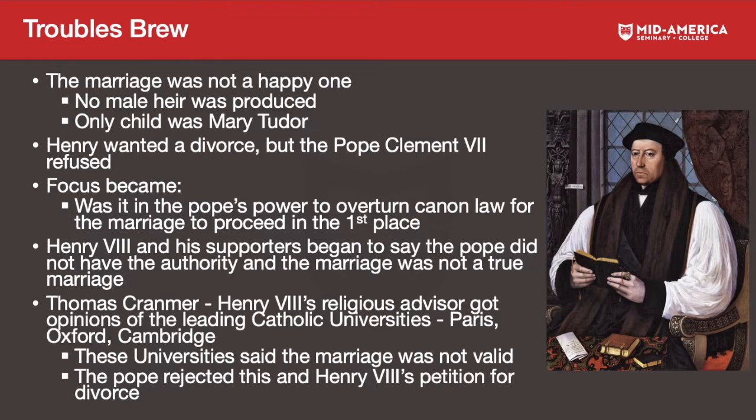Henry had to get the divorce through the Pope, but Pope Clement the Seventh refused — there was no reason for it. The focus then became whether it was even in the Pope's power to overturn canon law for the original marriage. Henry the Eighth and his supporters began to say that the Pope did not have that authority and the marriage was not a true one.